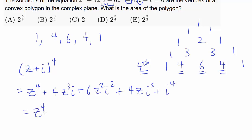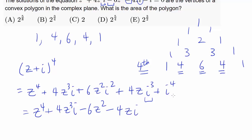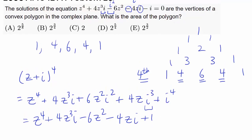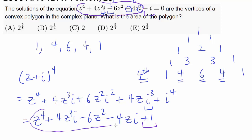Expanding this, we get z to the fourth plus 4z cubed i, and i squared is negative 1, so we write this as negative 6z squared, and i cubed is negative i, so we have negative 4zi, plus i to the fourth which is 1. Realize that our expansion is almost exactly the equation given to us, except that instead of plus 1 we have minus i. The rest are equivalent: z to the fourth plus 4z cubed i minus 6z squared minus 4zi.